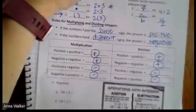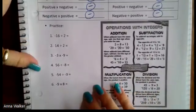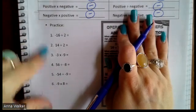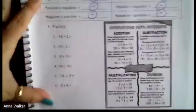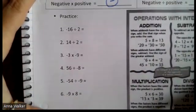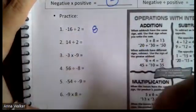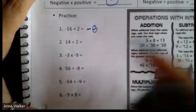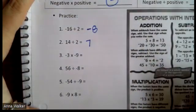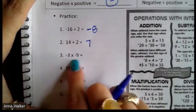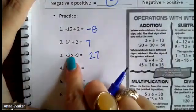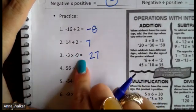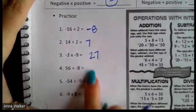Let's look at a couple of examples. Negative 16 divided by 2: 16 divided by 2 is 8, and since the signs are different, our answer is negative 8. And 14 divided by 2: both are positive, so our answer is positive 7. Negative 3 times negative 9: 3 times 9 is 27, and since they are both negative — thinking about the analogy, they both have a negative opinion — the outcome is positive, so negative 3 times negative 9 is positive 27. Go ahead and take a moment to try the other three on your own.